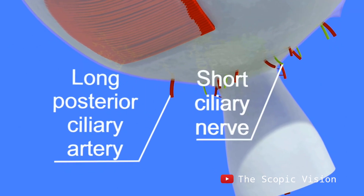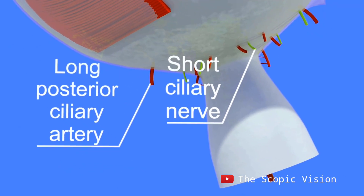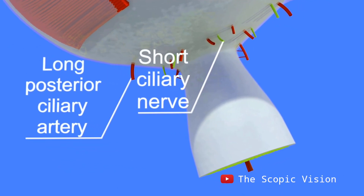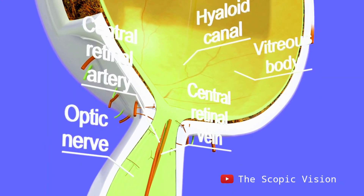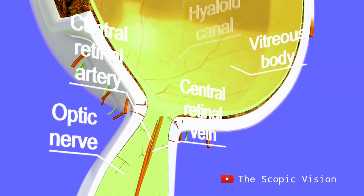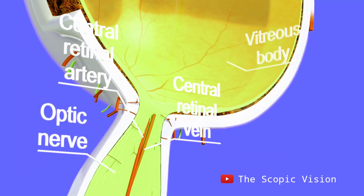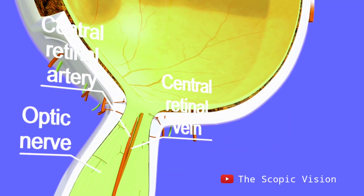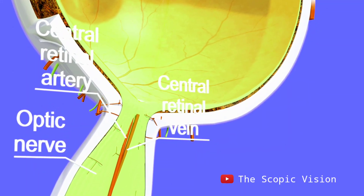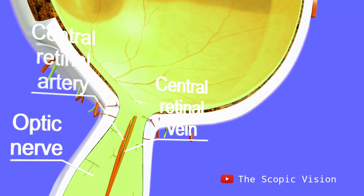The eye receives oxygen from the blood through the ciliary artery and central retinal artery. Deoxygenated blood is drained through multiple veins, including the central retinal vein.